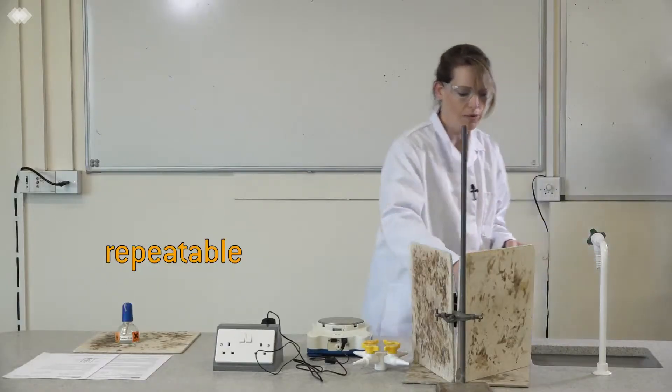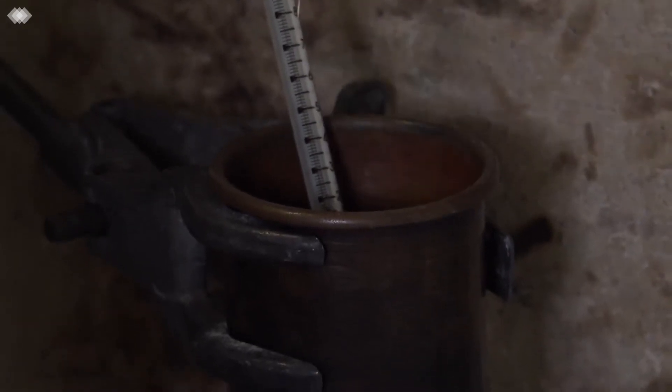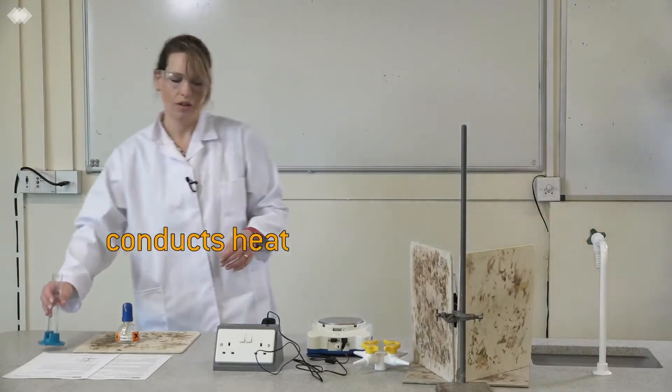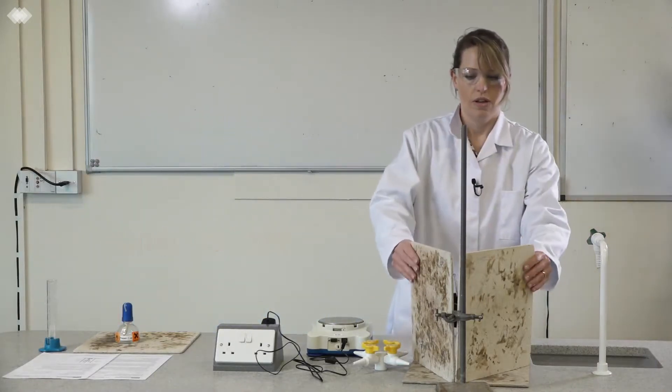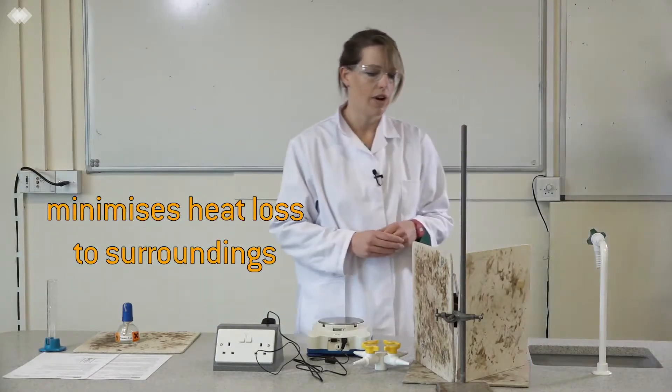It's important that it has to be measured accurately because it needs to be repeatable. Then put the water into the copper calorimeter. We use copper because it conducts the heat really well and minimizes any heat loss to the surroundings.